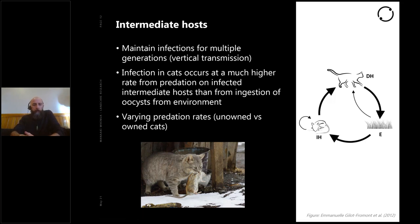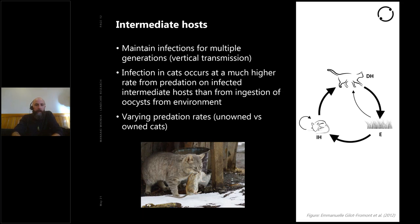There are also varying predation rates between unowned and owned cats. Studies have shown that feral cats are more infected with toxoplasmosis than pet cats, and the reason is they have a higher predation rate on rodents, increasing the chance they'll feed on an infected rodent. A pet cat may hunt some prey, but has supplemental food sources like cat food.